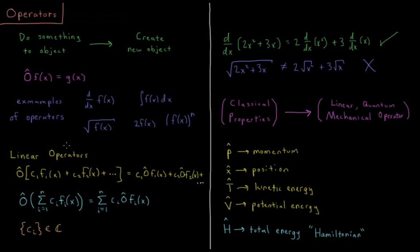Specifically in quantum mechanics, the things we're going to be interested in the most are so-called linear operators. Those are operators that obey the following property: if my operator acts on a function that is some coefficient times a function plus another coefficient times another function, this is equal to c1 times the operator acting on f1, plus c2 times the operator acting on f2. In general, the operator acting on the sum from i=1 to n of c_i times f_i equals the sum from i=1 to n of c_i times the operator acting on f_i.